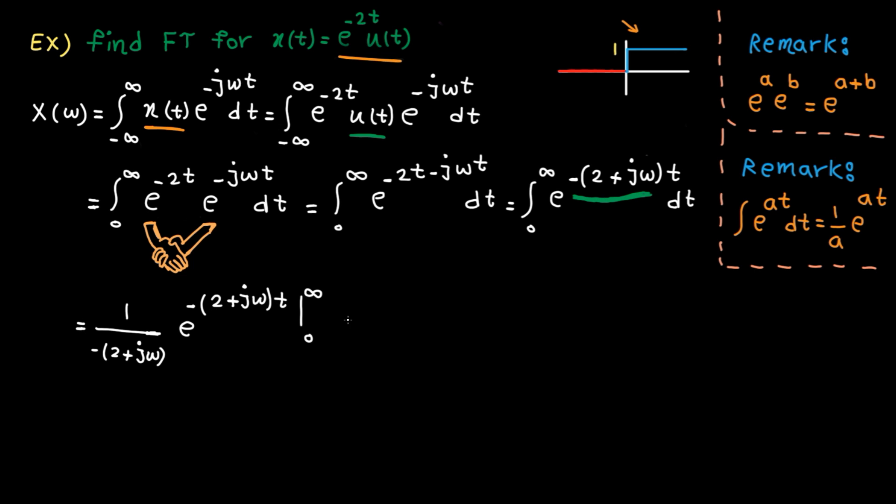Let's bring the minus sine to the front and replace t by upper and lower bounds. e to the power of minus infinity is 0. e to the power of 0 is 1. Minus by minus is cancelled and we get this. Done.